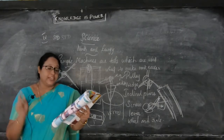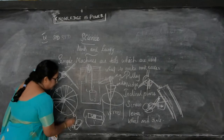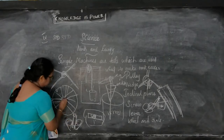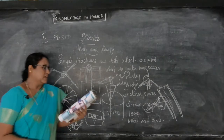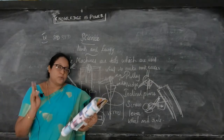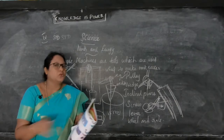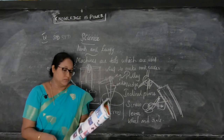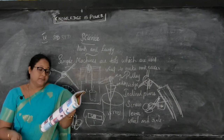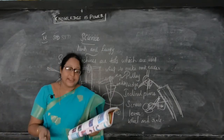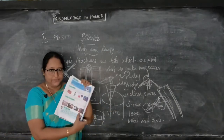A wheel and axle consists of a wheel attached to a small rod, and these two parts rotate together. Examples include bicycle wheel, door knob, grinder, and axle wheel.